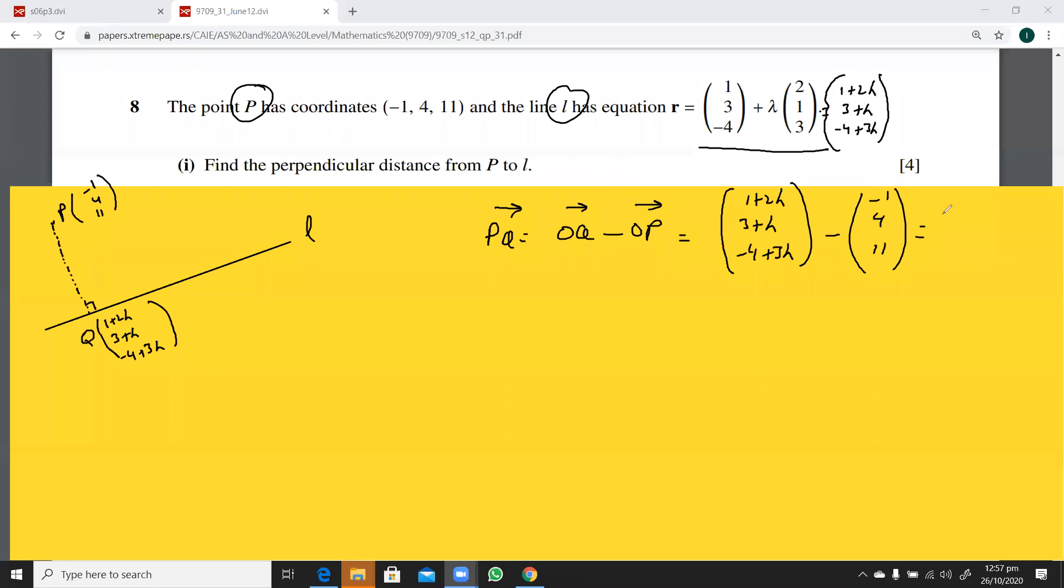Now, this is going to be 1 plus 2 lambda plus, so this is going to be 2 plus 2 lambda. And then this is going to be lambda minus 1, this is going to be 3 lambda minus 15. This is your PQ.